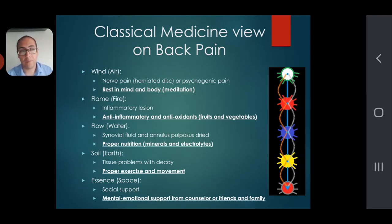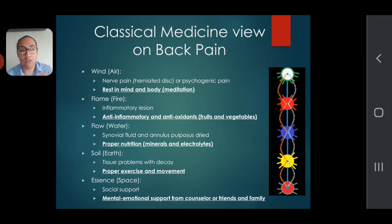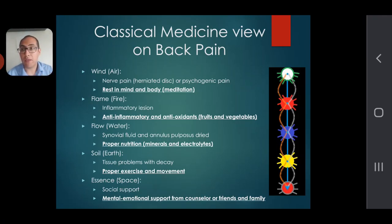The essence or space element involves your social interactions with the outside world — social support. If your back pain gets worse when you're not seeing people or you feel some type of detachment, or sometimes we just don't know why we have back pain even though everything else checks out fine, then perhaps you could try mental and emotional support — talking therapy, going on nature walks, talking to a counselor.